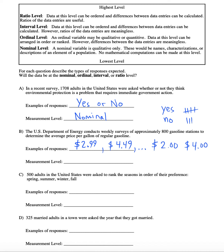Could it go even further — is it the ratio level? We could divide $4 per gallon by $2 to reveal that $4 is twice as much as $2 per gallon. So this is actually the highest level of measurement — this is the ratio level. The ratios have meaning.